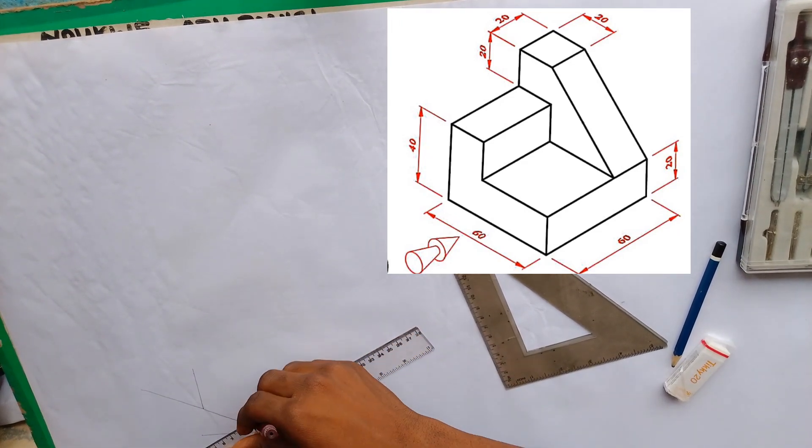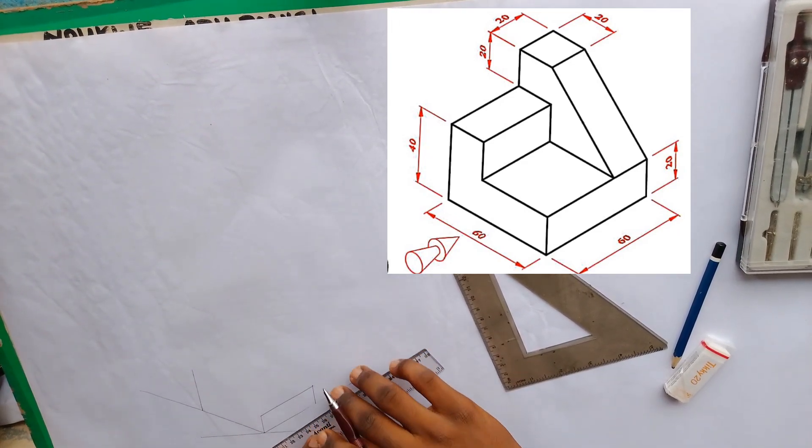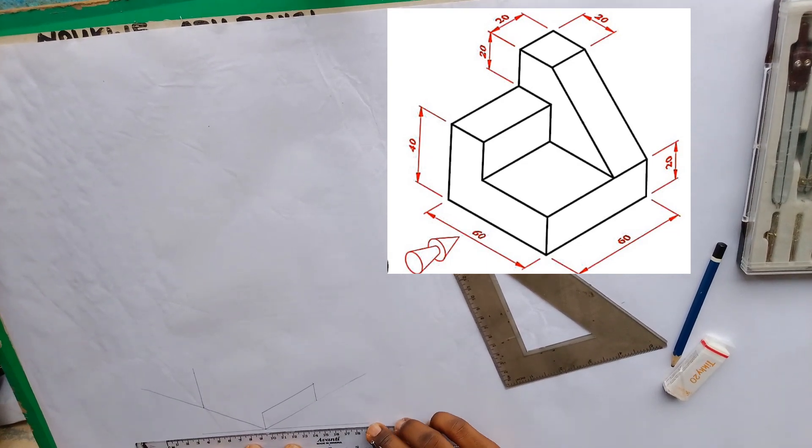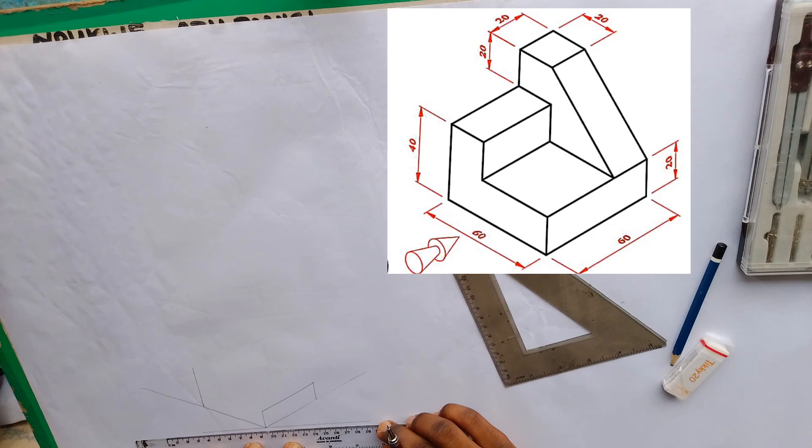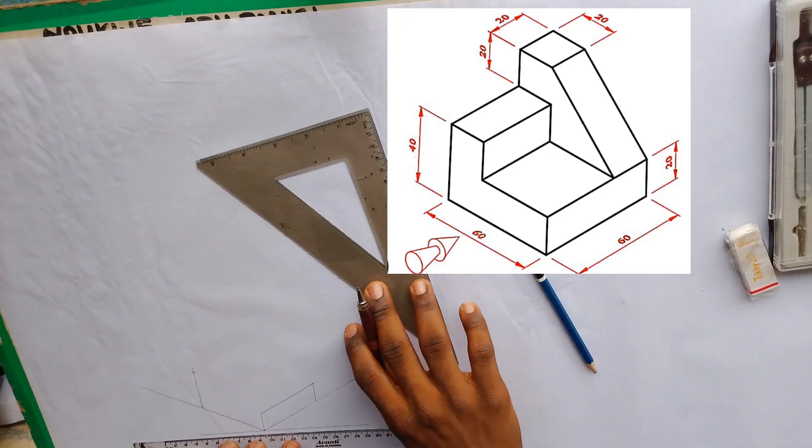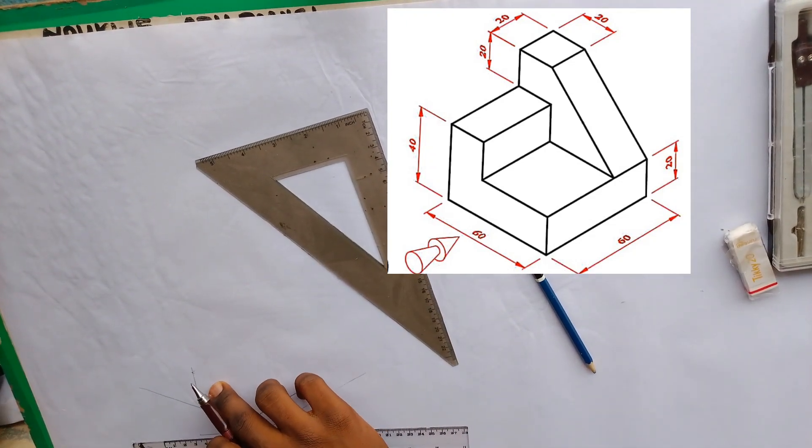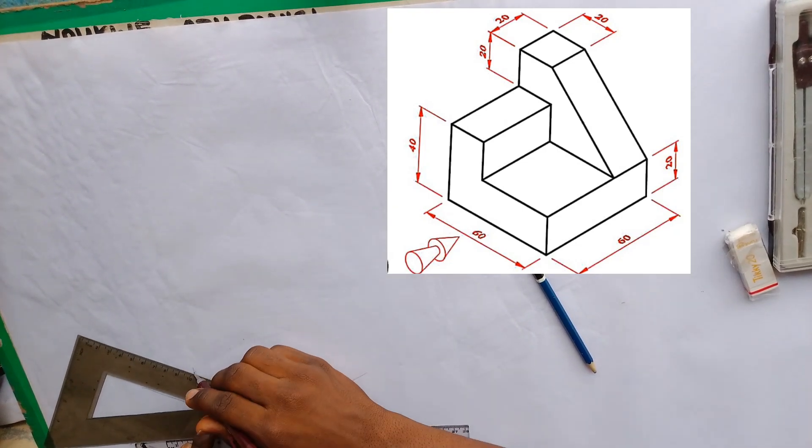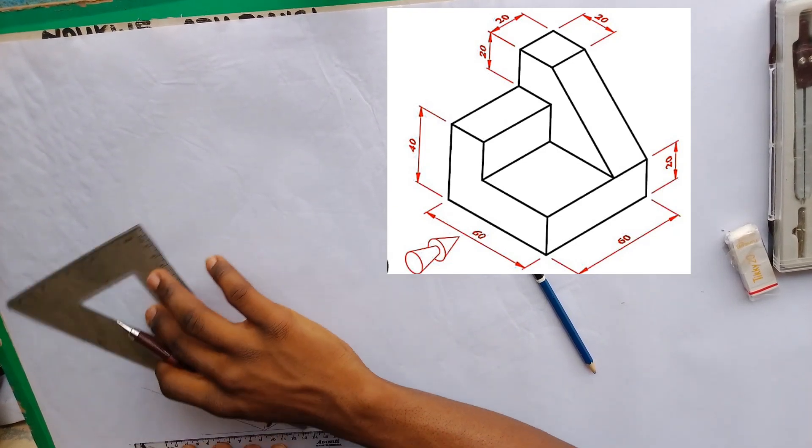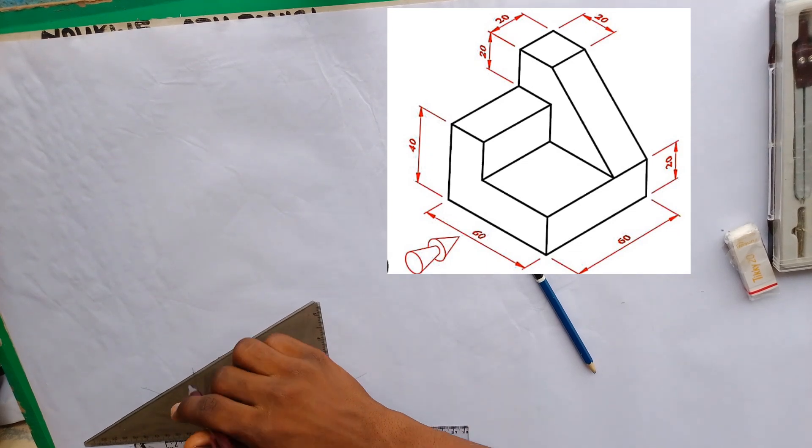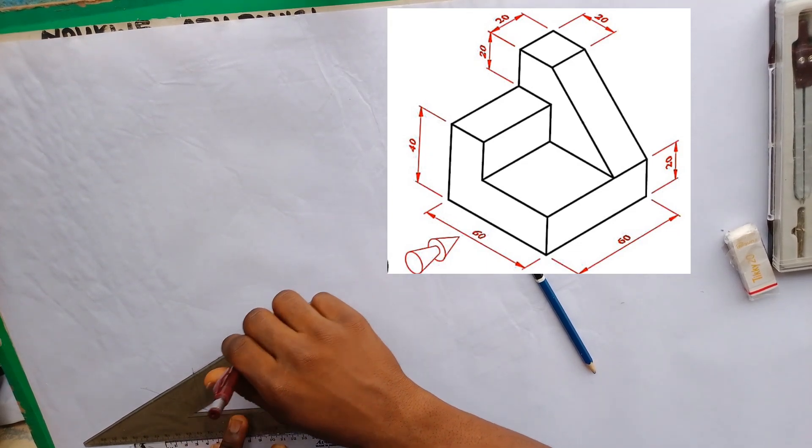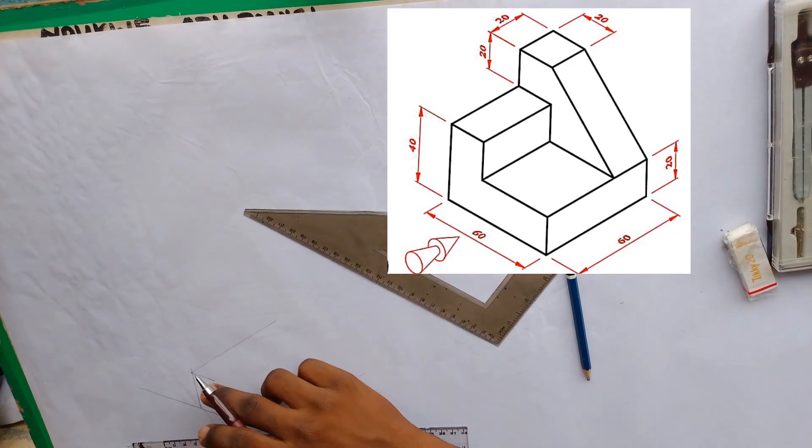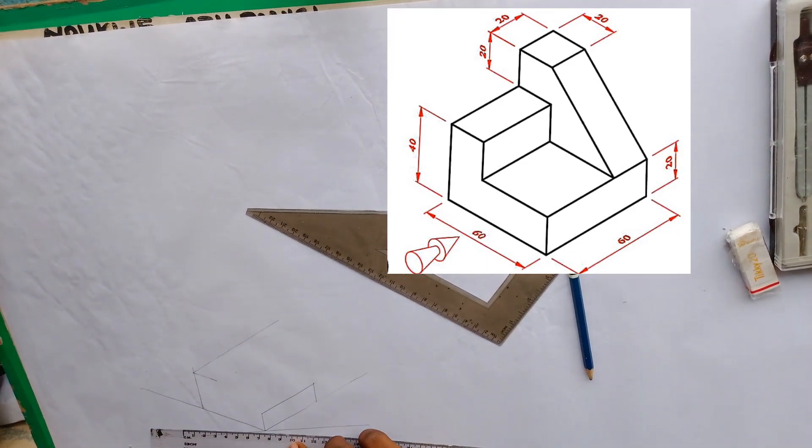These two sides will be connected. We'll mark that from here. From here to here is 20, as shown in the diagram.